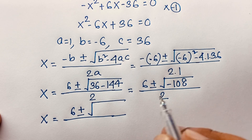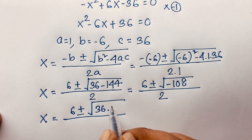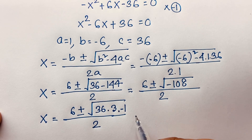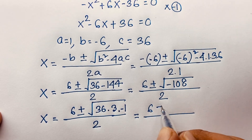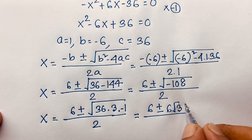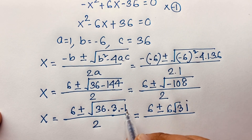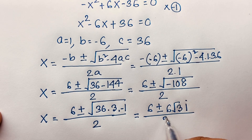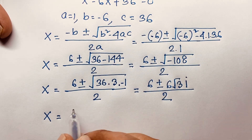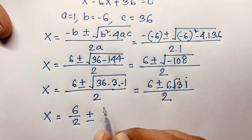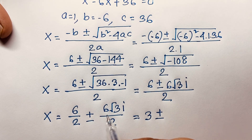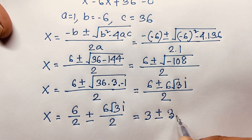Evaluating the expression: negative 108 equals 36 times 3 times negative 1. So the square root becomes 6 times square root 3 times i, since square root of negative 1 is i — a complex number. Separating the fraction: x equals 6 over 2 plus or minus 6 square root 3 i over 2, which simplifies to x equals 3 plus or minus 3 square root 3 i.